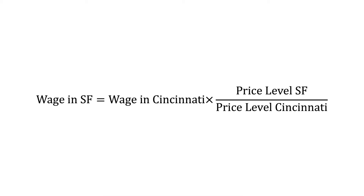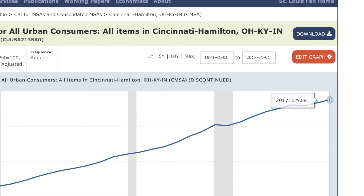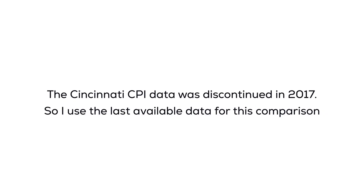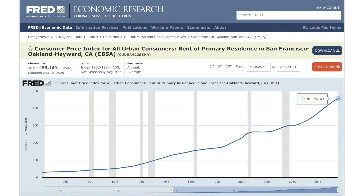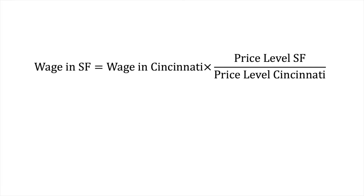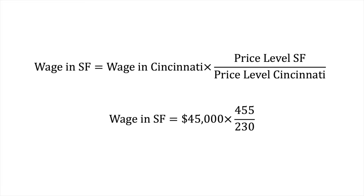Using FRED, we can find the CPI in Cincinnati in 2019 and then the CPI in San Francisco in 2019. Our equation is $45,000 multiplied by 455 divided by 230. The wage in San Francisco would have to be $89,021 for you to have the same lifestyle as in Cincinnati. You can find websites that make this conversion for you, but now you know what they are doing in the back end.